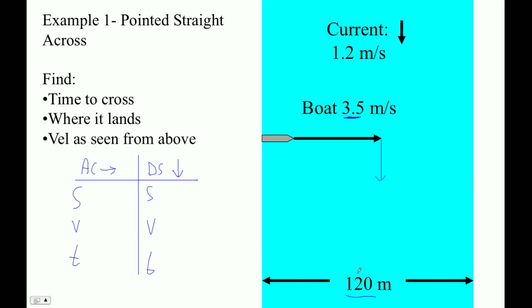In the across direction, this is our displacement. Our velocity across the river, since we're pointed straight across the river, all of that is across the river. So that's 3.5 meters per second.